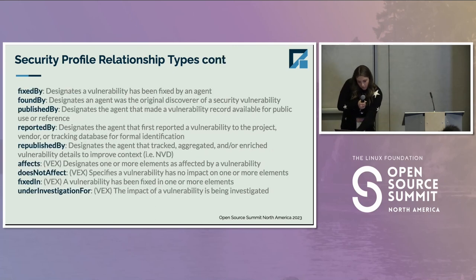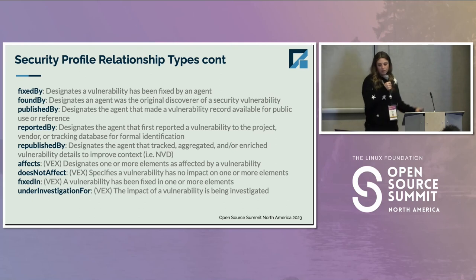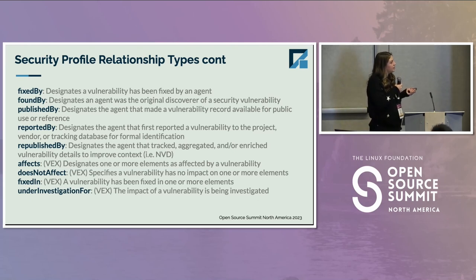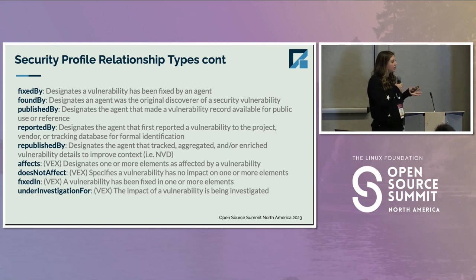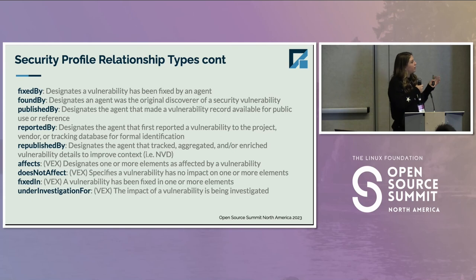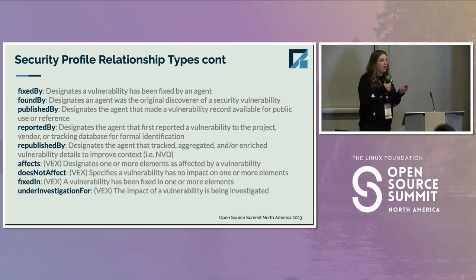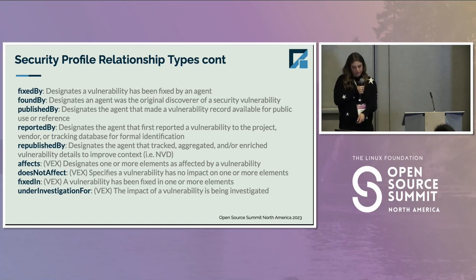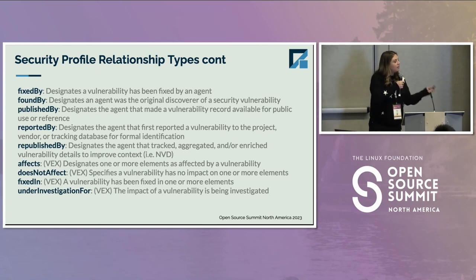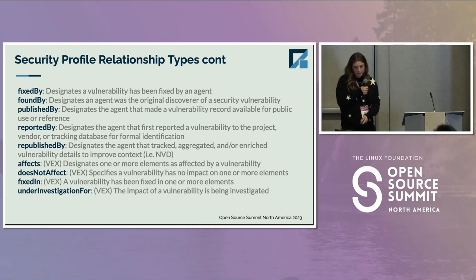There are more relationship types: fixed by, found by, published by, reported by, republished by — these are relationships you might use to associate an actor with a vulnerability element. This is all in the model on GitHub. There are also these: does not affect, fixed, and under investigation for — those are VEX relationships that you'll use for VEX relationship elements.